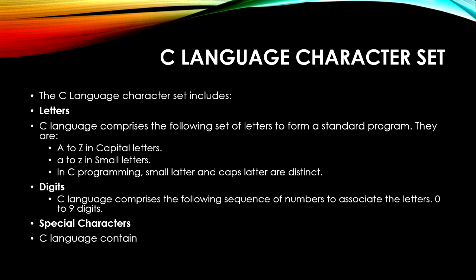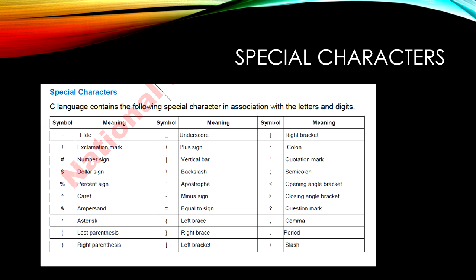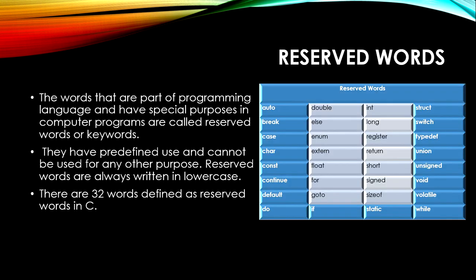C language comprises a sequence of numbers associated with the letters. Digits 0 to 9 are used in C language. The last category is special characters. C language contains different types of special characters like number sign, dollar sign, percentage sign, right parenthesis, left parenthesis, and others.